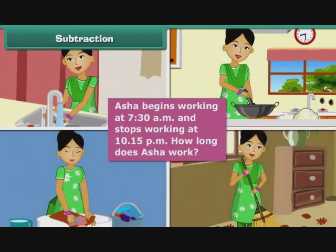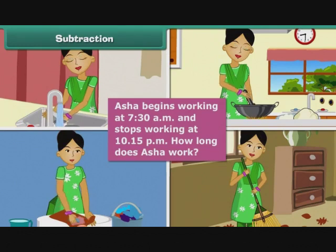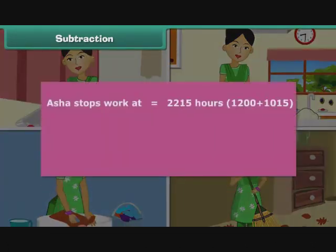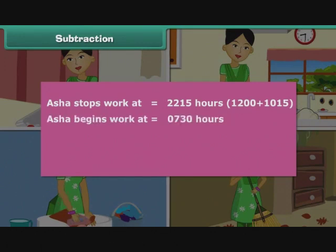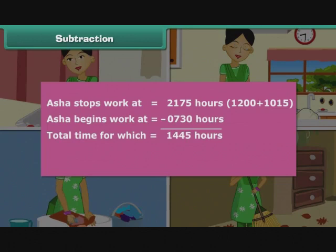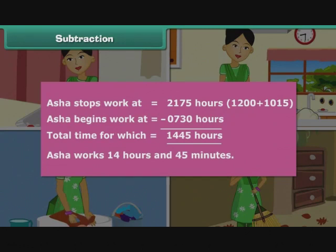Ashish begins work at 7:30 a.m. and stops at 10:15 p.m. How long does he work? We first express the times in 24-hour format: stop time = 22:15 hours (1200 + 1015); start time = 0730 hours. We cannot subtract 30 from 15, so we borrow an hour, adding 60 minutes and subtracting 1 from hours. Therefore, Ashish works 14 hours and 45 minutes.